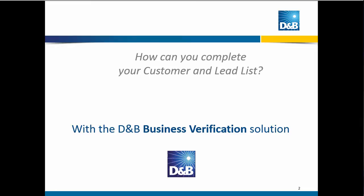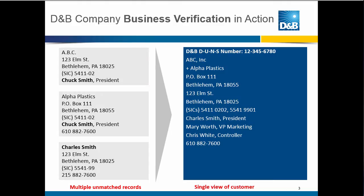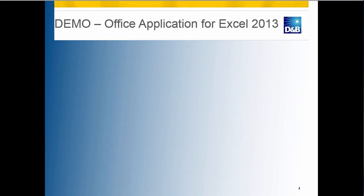Dun & Bradstreet has a business verification solution that looks kind of like this. On the left, which is what a lot of us have, we have company names in different formats, different street addresses — you can see the second one's a P.O. box. This business verification service accesses Dun & Bradstreet's global verified business database and provides back a completed view of your customers: company names, P.O. box, street address, officers, and the unique identifier from Dun & Bradstreet called the DUNS number. So, you're probably interested — let's take a look.